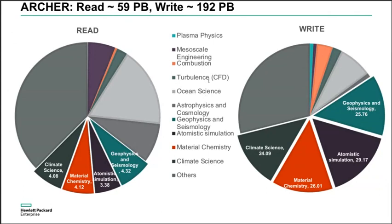The other four projects — geophysics, atomistic simulation, material chemistry, and climate science — have a very similar trend: they read one byte and write six to ten bytes. Climate science is close to six, material science is similar, atomistic simulation a bit more. All four of these projects have a very similar read/write trend.